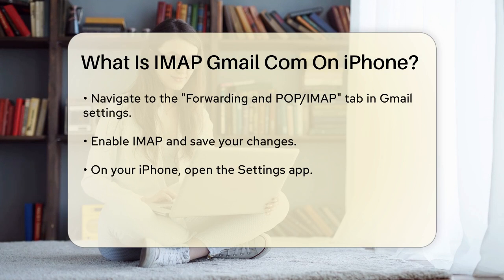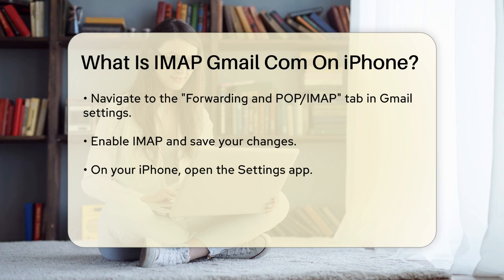Next, on your iPhone, go to the Settings app, then select Mail and choose Add Account. Here's the important part: instead of selecting Gmail directly, choose Other. This is because the Gmail icon might still be set to the older POP protocol by default.